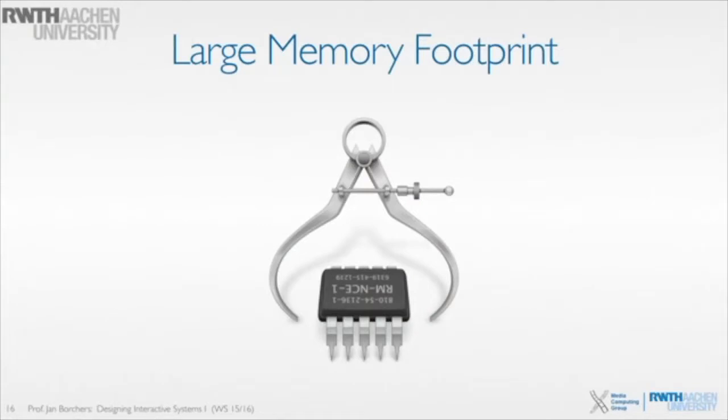For example, via the network. The network can be slow is something that people know, and there are good APIs that are asynchronous so that you can work around some of the latency problems of network traffic. But with hard disks, a lot of the I/O is still expected to be fast enough, and so it's often synchronous operations, which then will severely slow down your software.